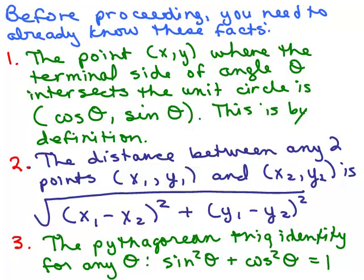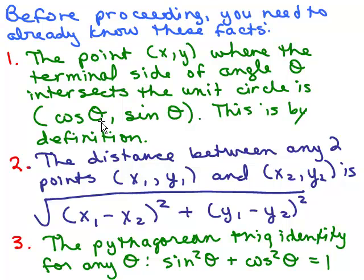Before proceeding, you need to already know these facts. If you have a point on the unit circle, call it XY, where the terminal side of an angle intersects that unit circle, then the ordered pair is cosine theta, sine theta. The X value is just the cosine theta, and the Y value is just the sine theta. This is by definition — one of the trig definitions.